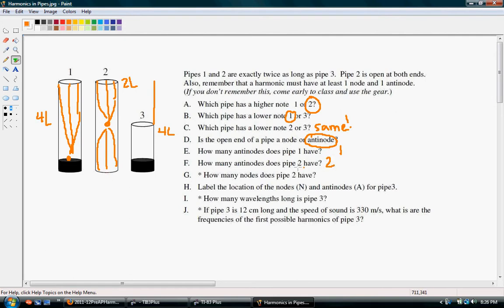So pipe 2 has two anti-nodes. How many nodes does pipe 2 have? That would be one, right here. Alright, label the location of the nodes and anti-nodes for pipe 3. Okay, the node would be at the bottom and the anti-node will be at the top.